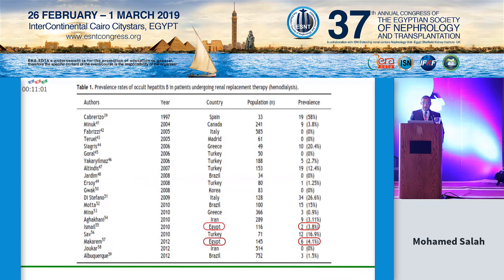Another study compared many dialysis centers all over the world. Two centers from Egypt were involved and showed that the percentage of occult hepatitis among dialysis patients is around 4% of the studied patients.